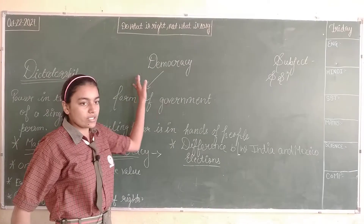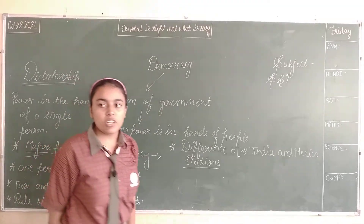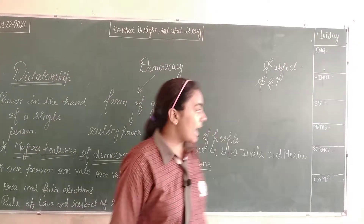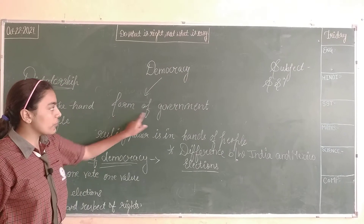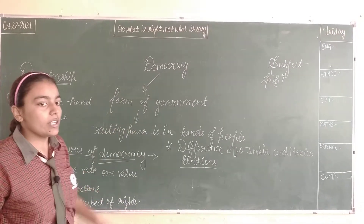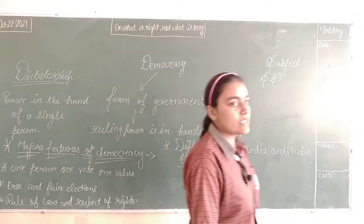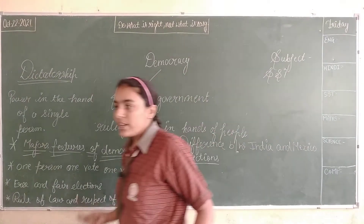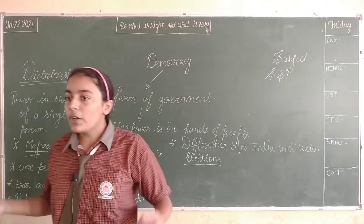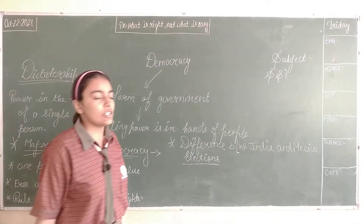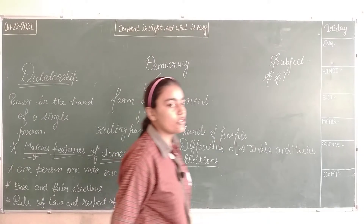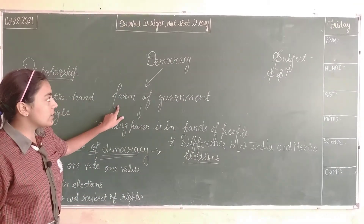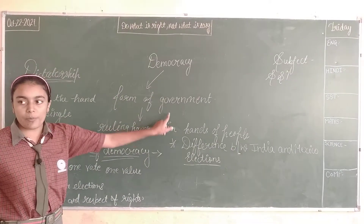What is democracy? Democracy is the form of government in which ruling power is vested in the hands of the people, and the government is answerable to the people, who can change it through constitutional means. So democracy is the form of government.